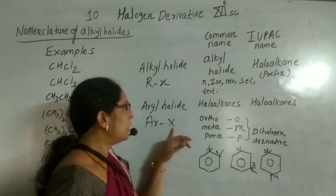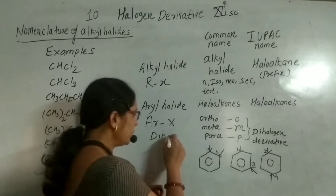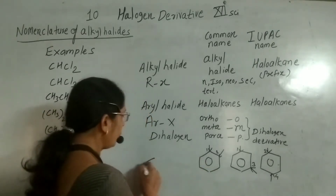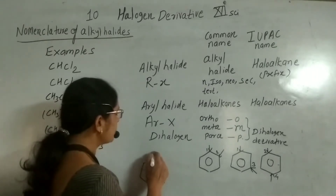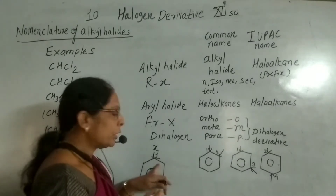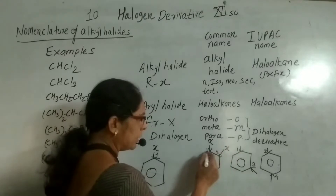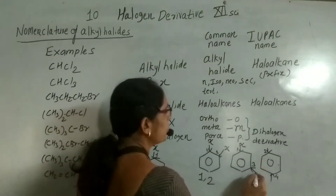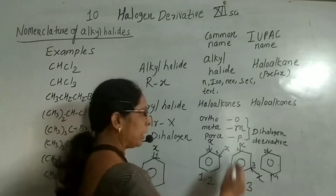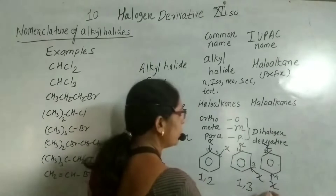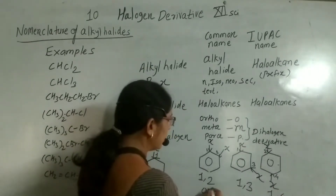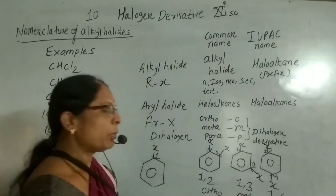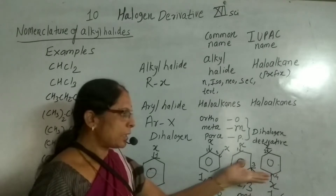When you consider the aryl halide as a dihalogen derivative, with respect to monosubstitution at carbon number 1: the position 1,2 is called ortho; the position 1,3 is called meta; and the position 1,4 is called para. These prefixes — ortho, meta, para — are used in the common naming system.